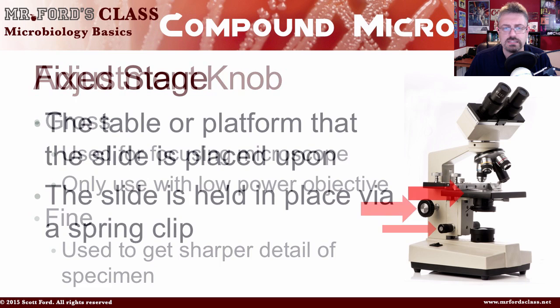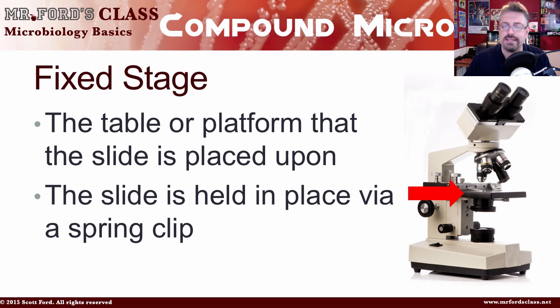The fixed stage is the table or platform where you place your slide. The slide is held in place via a spring clip on most microscopes. One story: while teaching anatomy in high school, a student thought you had to physically pull the metal clip over the slide, causing a grinding glass sound. The correct technique is to just place the slide down, gently release the spring clip, and it will secure the slide — don't force it on top.